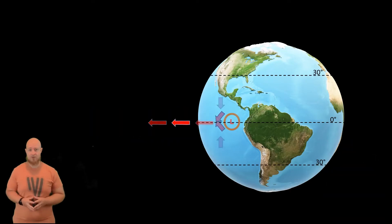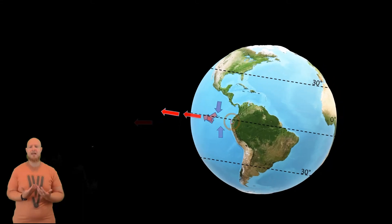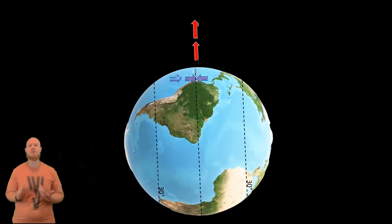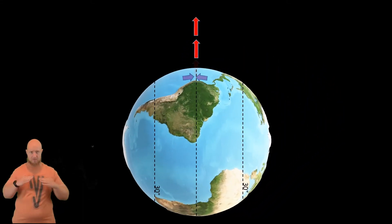Because air is rising, air along the surface comes to take its place. Notice how we have air coming in from the southern hemisphere towards the equator and from the northern hemisphere towards the equator. These two air masses converge near the equator and actually end up assisting in the upward movement as they move upwards when they collide. They converge.